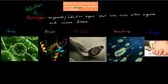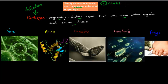A pathogen is any organism or infective agent that lives in or on other organisms and causes disease. There are two parts you should know. First, any organism that causes disease is considered a pathogen — so it has to cause disease, that's one condition. The other condition is it has to live in or on another organism.